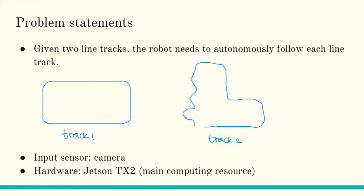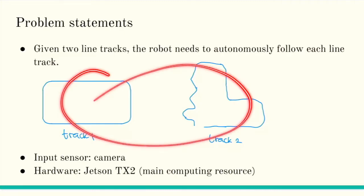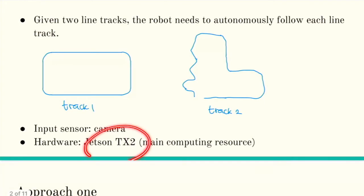For the input sensor we have a camera on the robot — we can take a color RGB image. For the hardware we can use the Jetson TX2, which has a good embedded GPU from NVIDIA, so we can apply a deep learning model to do this task. The Jetson TX2 is connected to the robot's motors.